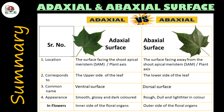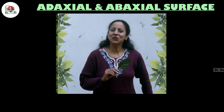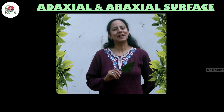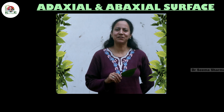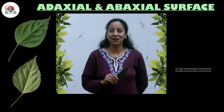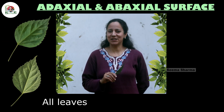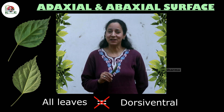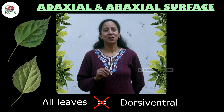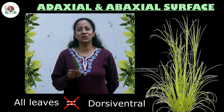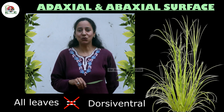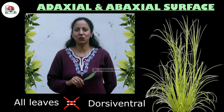So that's it about the basic differences and comparison between these two types of leaf surfaces. This video also enabled you to explore the dorsiventral nature of leaves. However, not all plants have dorsiventral leaves — there are certain leaves where there is hardly any difference between the upper and lower surface. Let me show you one.